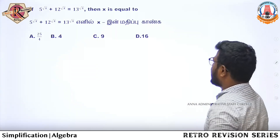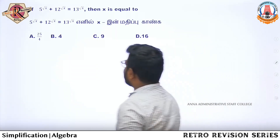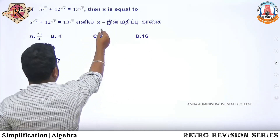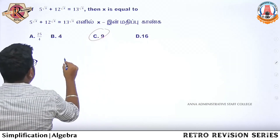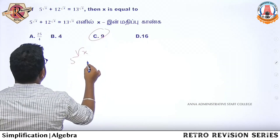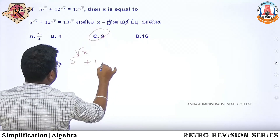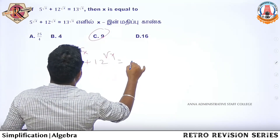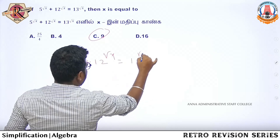Optional question. So optional. First, option 3. So: 5 to the root x plus 12 to the root x equals 13 to the root x. So 13 to the root x.